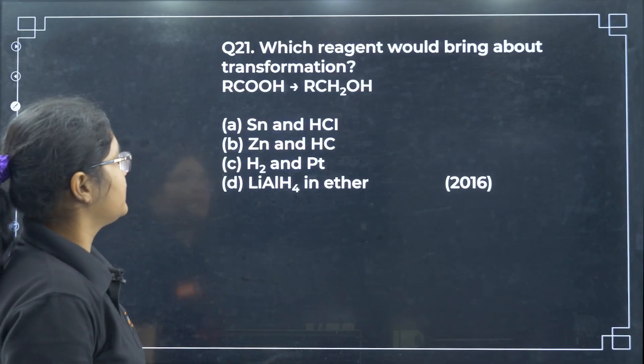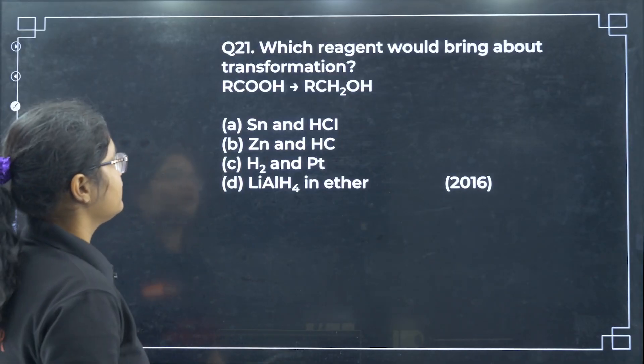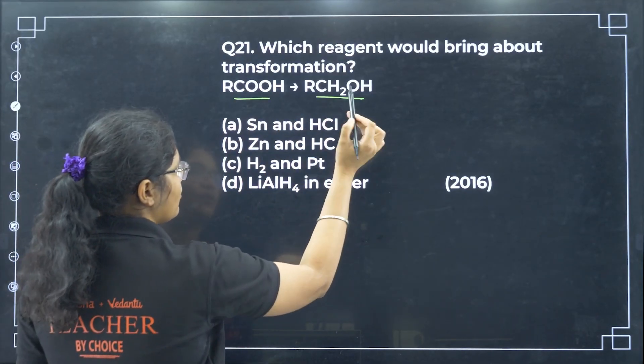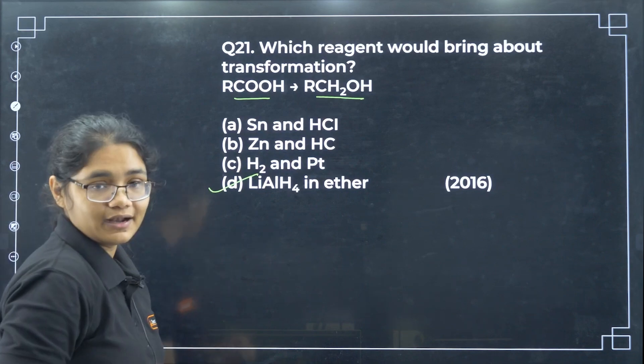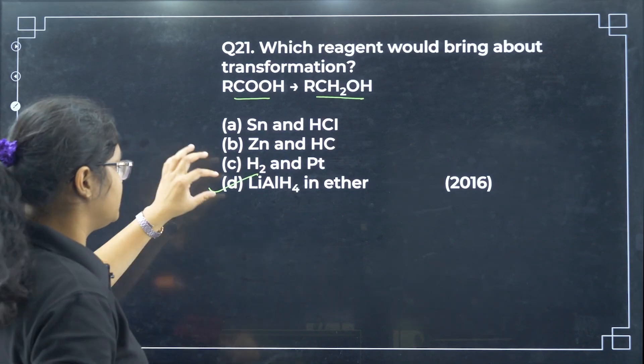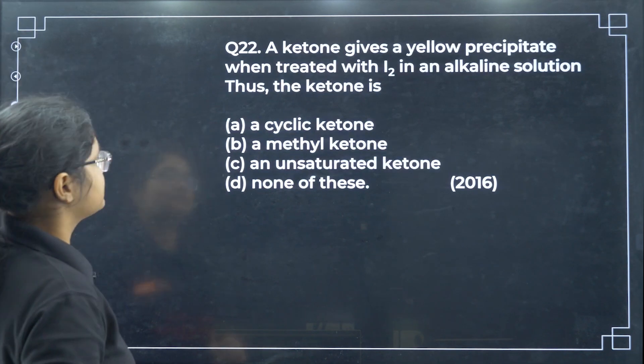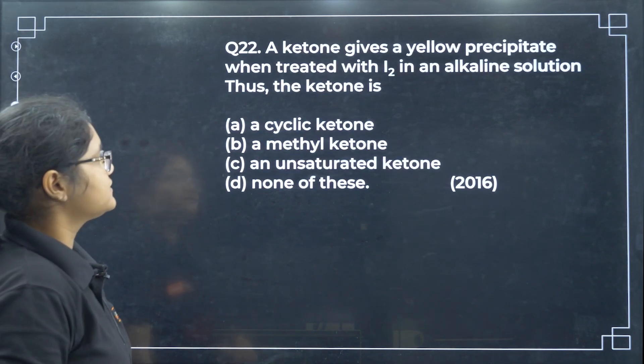Which reagent would bring about the transformation of acid to alcohol? Lithium aluminium hydride (LiAlH4) is a reducing agent that converts the acid to alcohol.